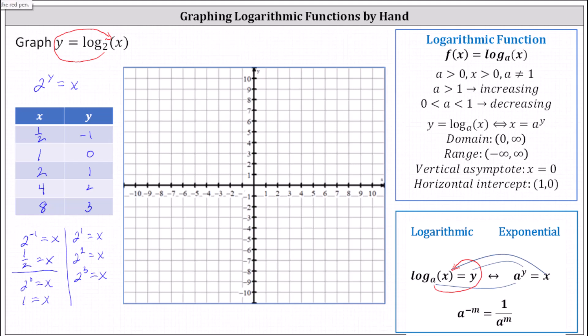We have one half comma negative one, one comma zero, two comma one, four comma two, and eight comma three.